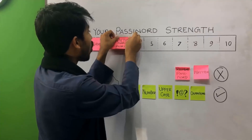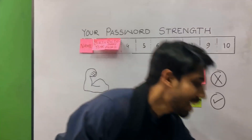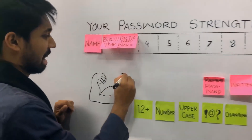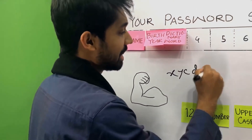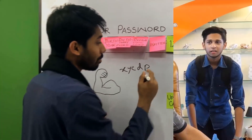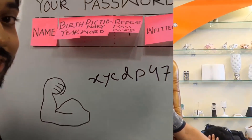Today's video is about passwords. I will give you a common word to use as a password. For example, characters like x, y, c, d, p, and numbers like 4, 7, 5. Just take the first letters: R$, D$.